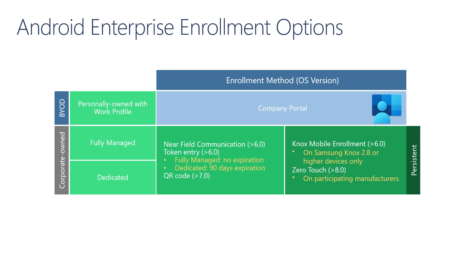For Knox mobile enrollment, this applies to Android devices with Samsung Knox 2.8 or higher with OS version 6.0 and above. For non-Samsung devices, there is the zero-touch option for devices with Android 8.0 and above on participating manufacturers. This option is similar to iOS automated device enrollment or Windows Autopilot. Every time a device is reset, the device is pushed back into an automated enrollment flow, so the devices maintain their MDM enrollment no matter how many times they are reset.